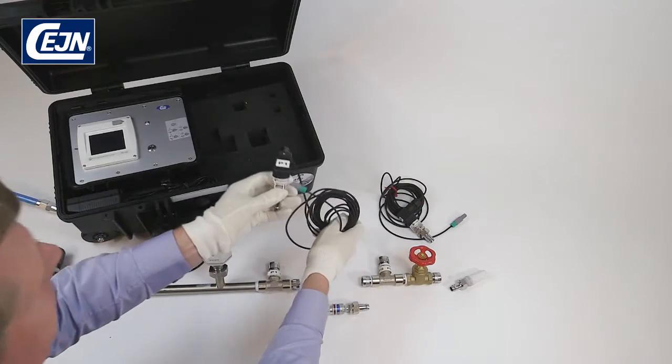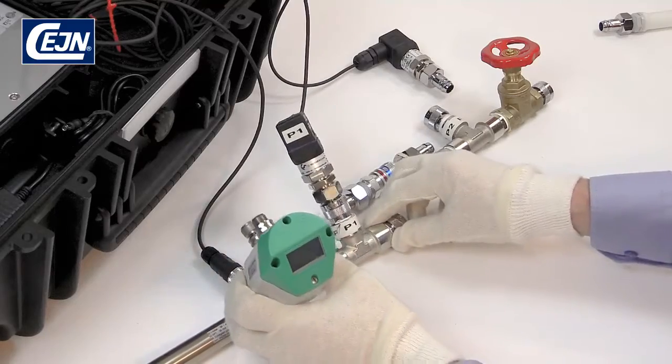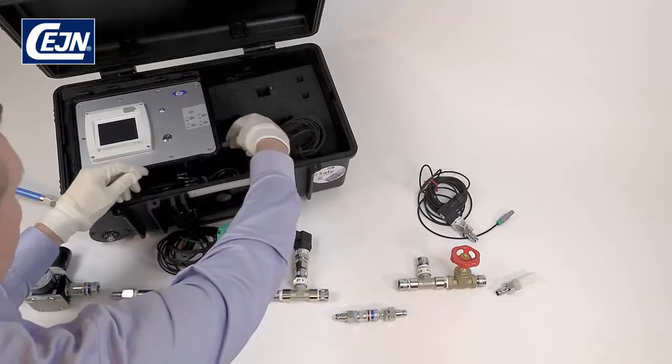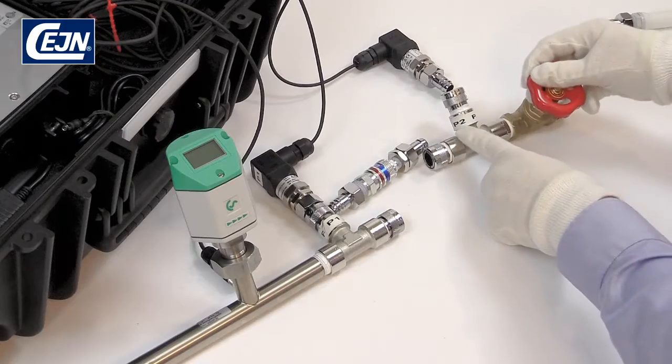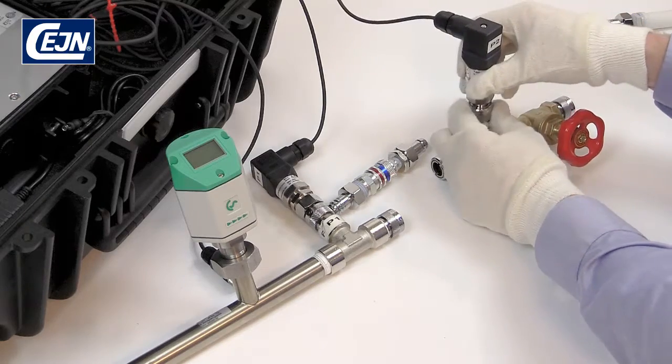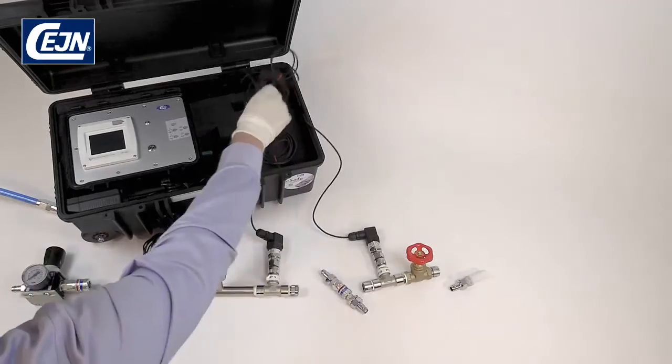Now we'll assemble all the components. Take the pressure sensor P1 and connect it with P1 on the flow pipe. Plug the cable into the control box. Then connect the sensor P2 with P2 on the end flow pipe and plug the cable into the control box.